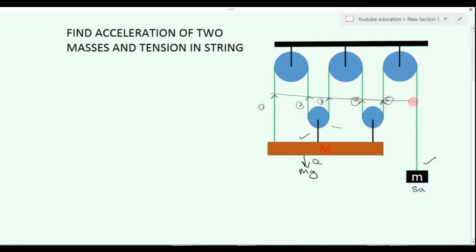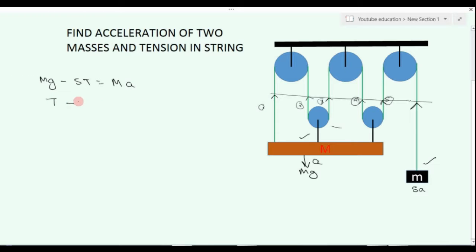And here we will cut it. Now, actually, we will start the timing. This is supposed to be on top. So, we will use that: mg minus 5t is equal to m into a. And we will put small mass here — this will be on top. So, mg is equal to m into 5a.